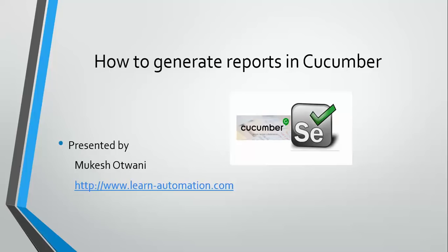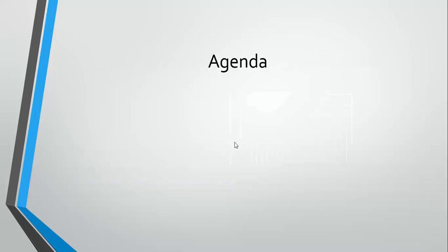Welcome back to another video in the Cucumber series. In this video we'll mainly focus on how we can generate reports in Cucumber. Till now we have seen only printing on console or in a JUnit section, but we need separate reporting because if you are working with automation you need good reporting so that you can present it to your client, management, or team lead. Generating reports in Cucumber is very easy, and first I'll show you how to generate a simple HTML report.